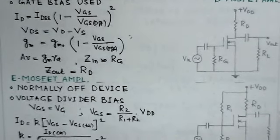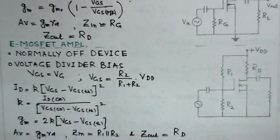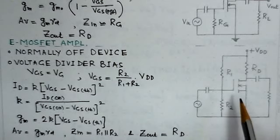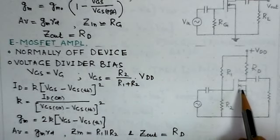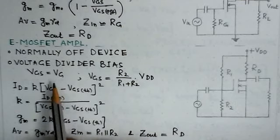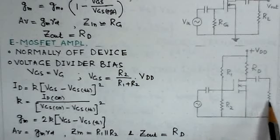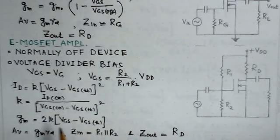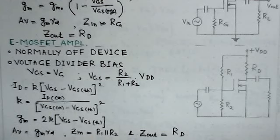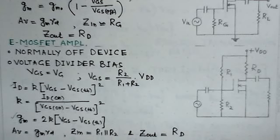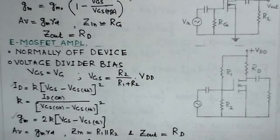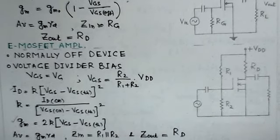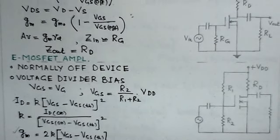The E-MOSFET amplifier circuit uses a potential divider bias arrangement. This device is normally off, and using voltage divider bias, VGS equals VG since the source is grounded — VGS equals R2 over (R1 plus R2) times VDD. The value of ID, K, and GM can be determined accordingly, and from these you can determine the voltage gain, input impedance, and output impedance. The procedure is similar to junction FETs, though the gain of MOSFET amplifiers is generally lower than BJTs and even FETs.